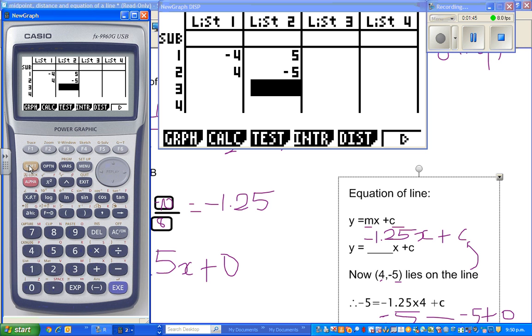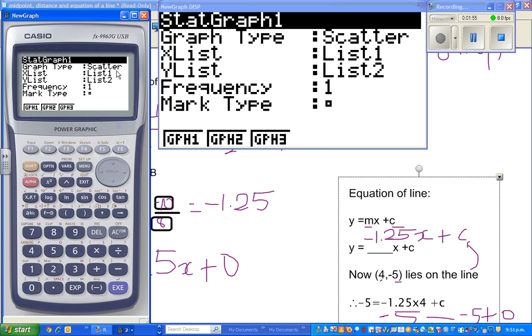By default, most of your graphic calculator will be... you go to graph first, F1, and you look at the setup, always look at the setup. By default, it will be on scatter plot. This is called the scatter plot.